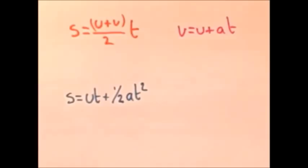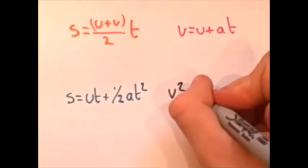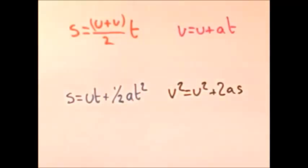Our third one is end speed equals start speed plus acceleration times time. And our last one is end speed squared equals start speed squared, plus two times acceleration, times distance.